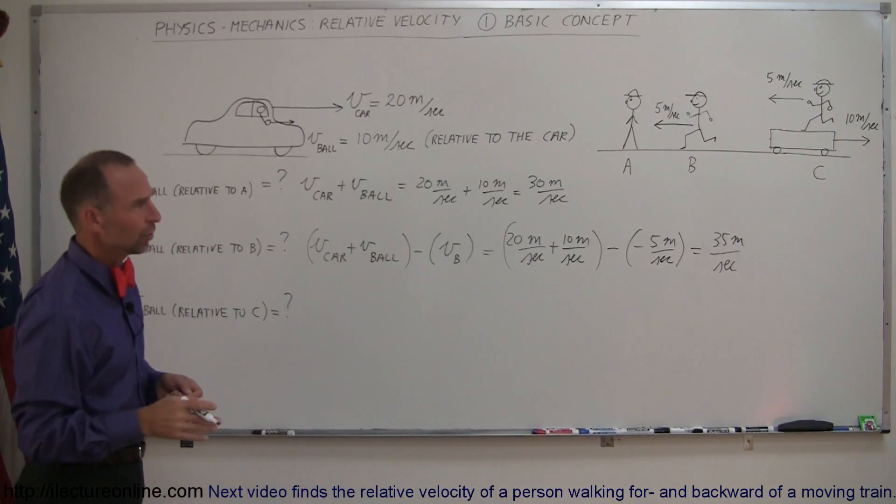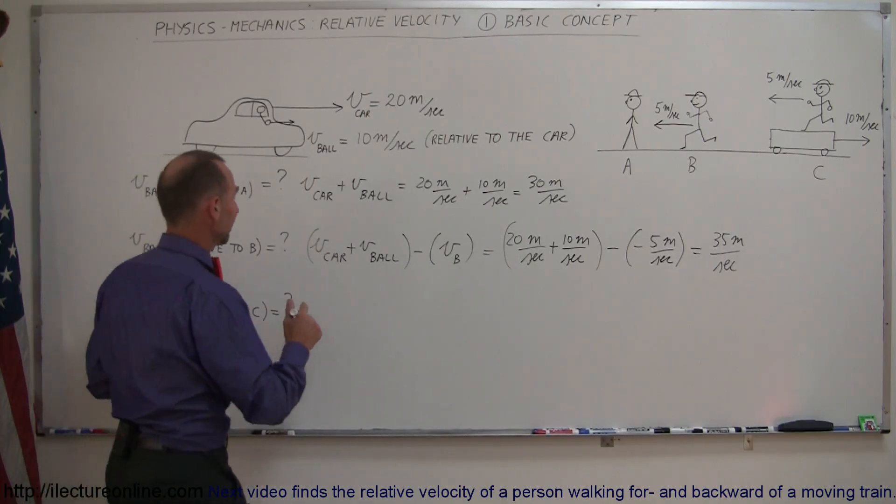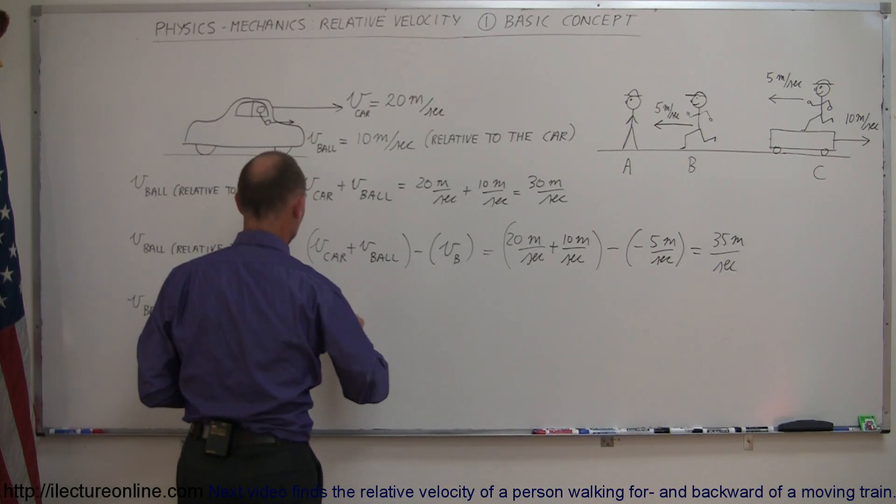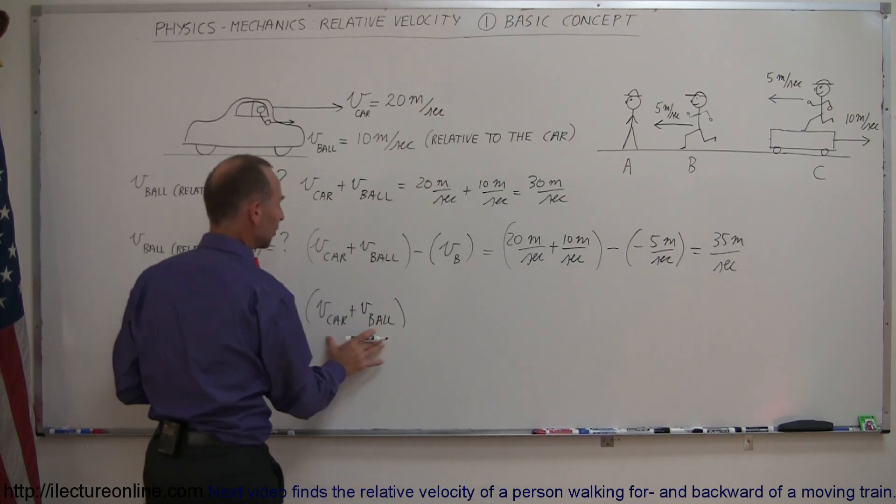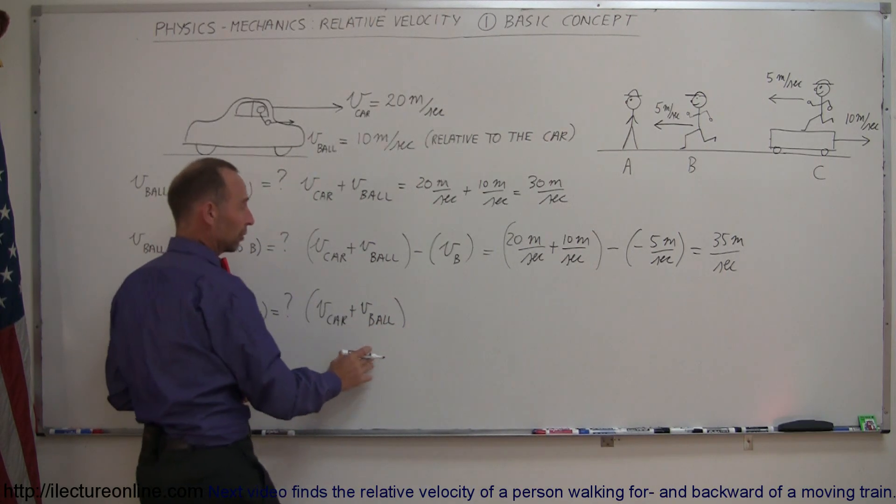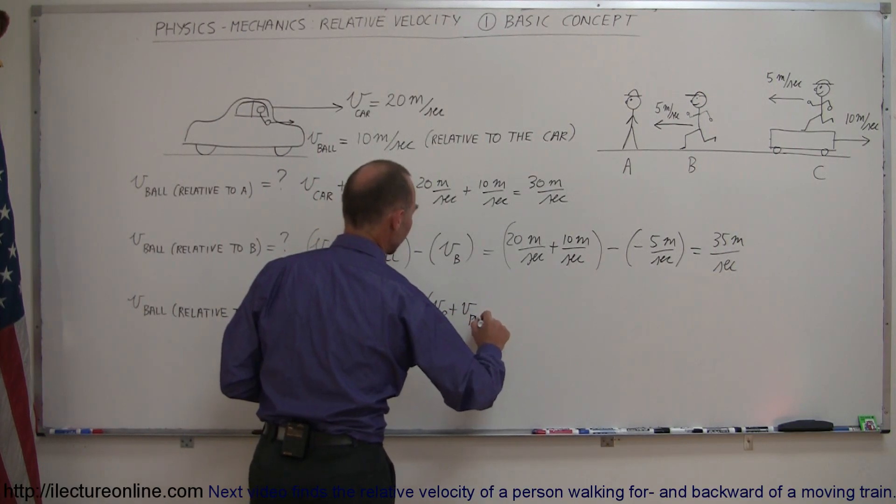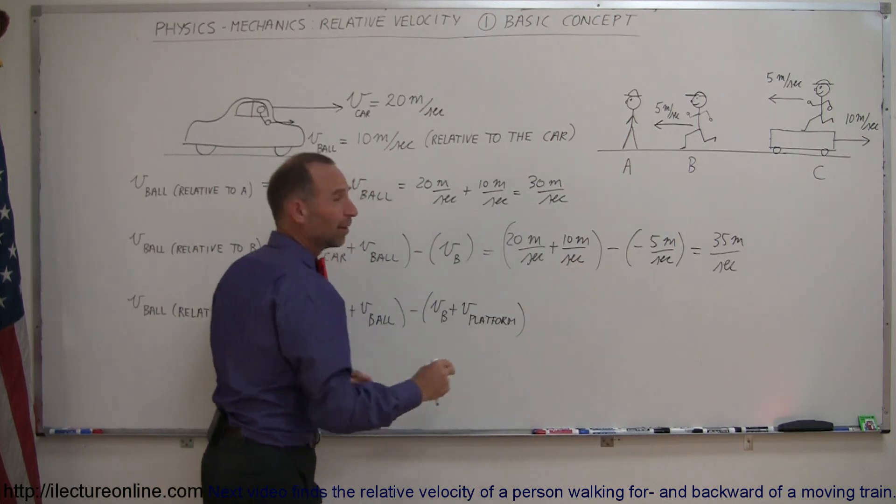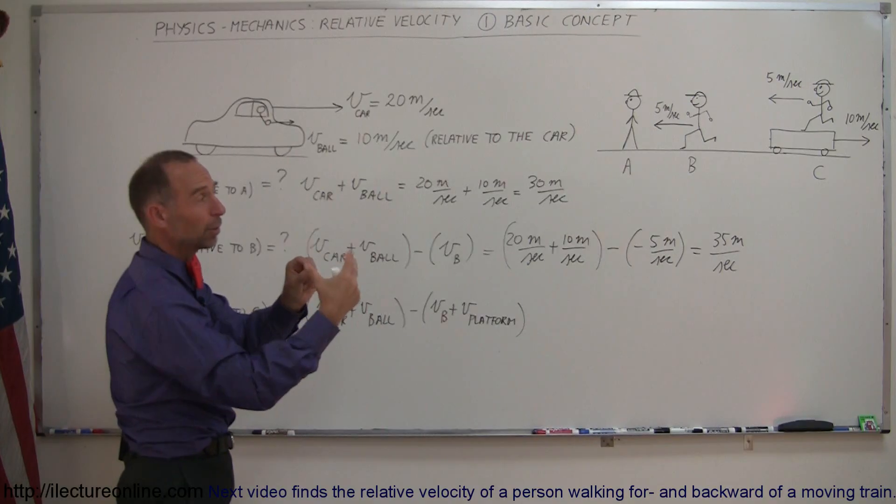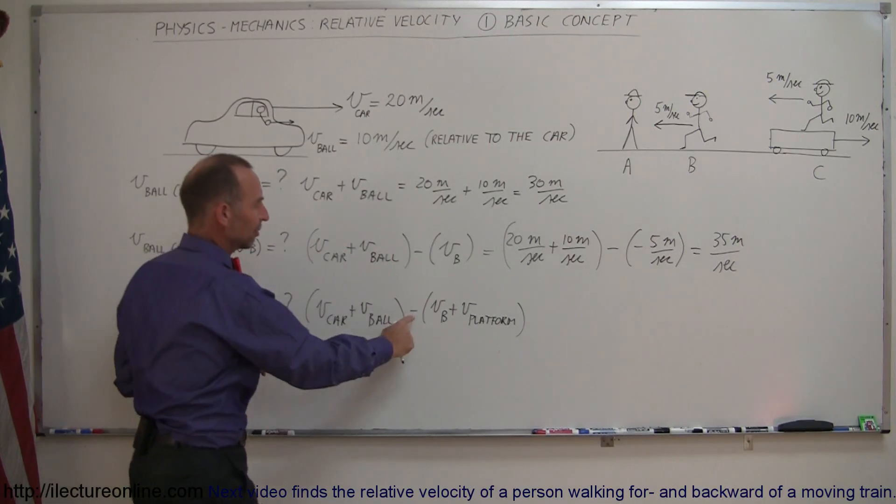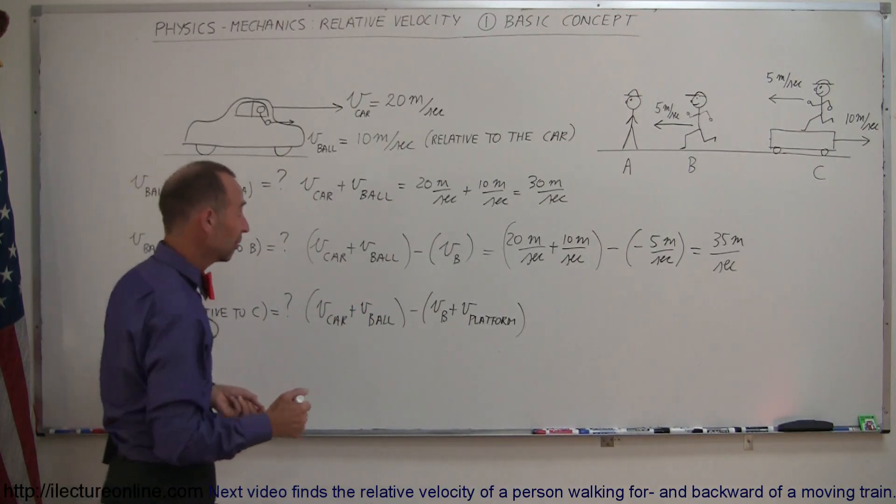What about Observer C who's running on a platform that's moving to the right at 10 meters per second? That will then become V of the car plus V of the ball, which again gives us the velocity of the ball relative to the road or stationary observer, minus V of the ball plus V of the platform. Now notice that the platform is moving to the right, moving away from the ball, so the ball has a harder time catching up, so the ball will appear to be moving slower relative to C and so therefore we subtract that velocity and therefore we get a smaller velocity. So let's see what that ends up being.